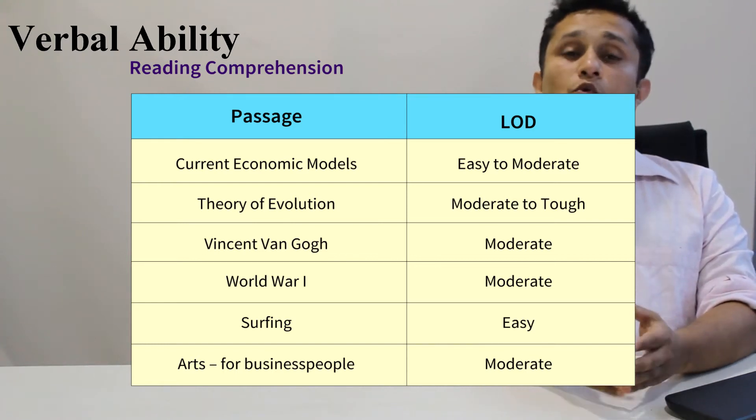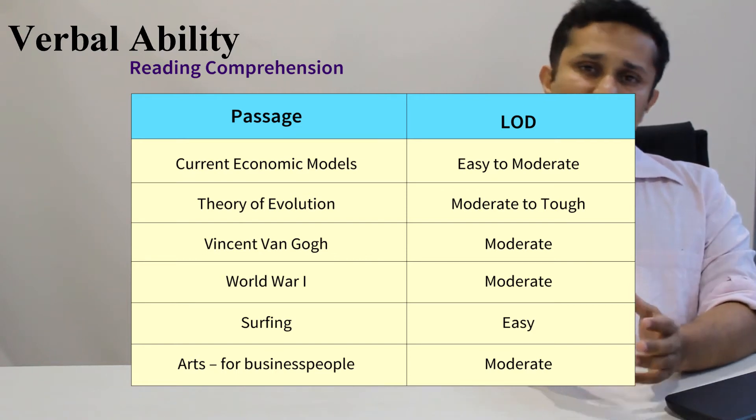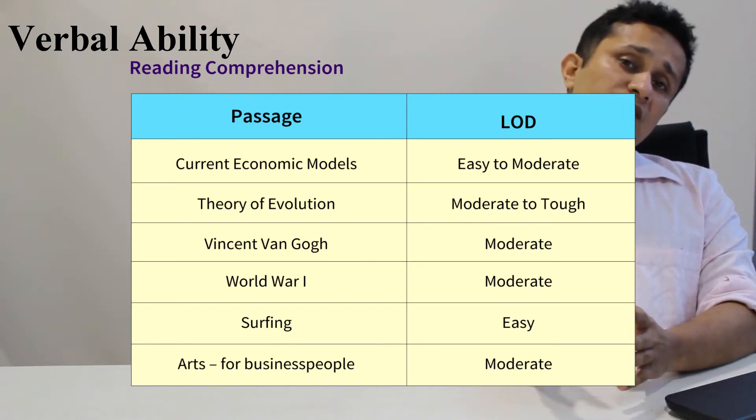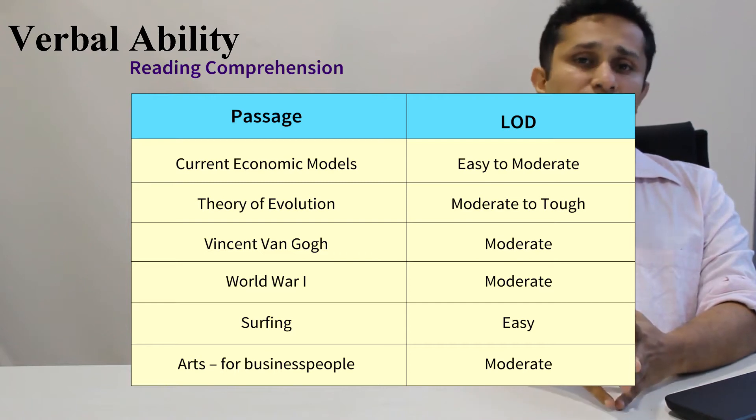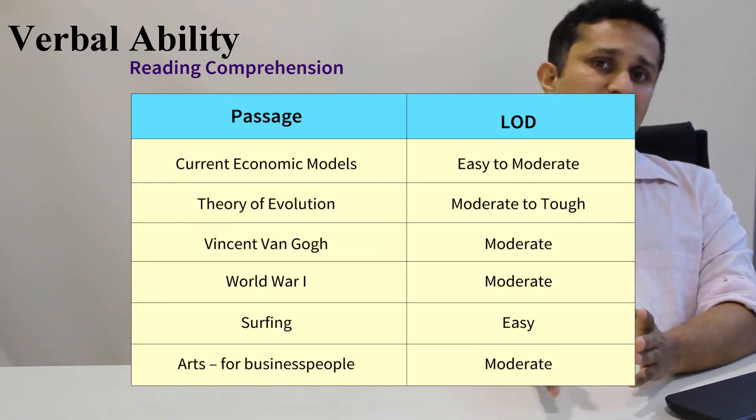Then there were the remaining 2 RCs. One on arts as a subject for business people. This was slightly moderate or moderate to tough, so that could have been left to your discretion. And then there was an RC on Charles Darwin's theory of evolution. This is something that you should have skipped because this was the toughest RC of the whole lot.